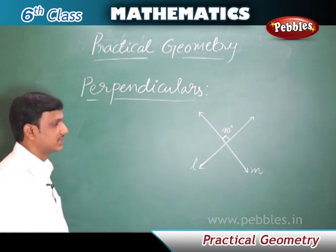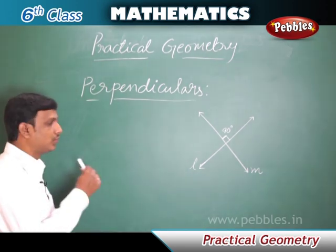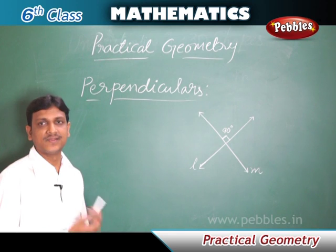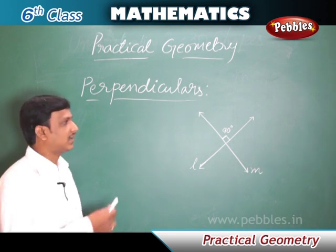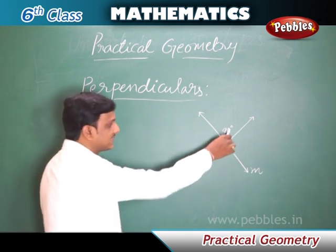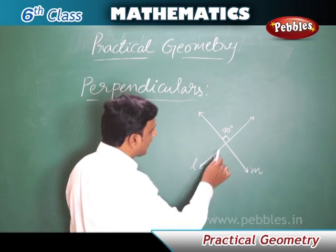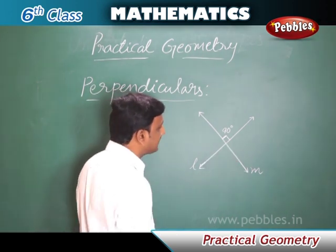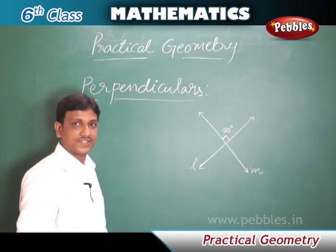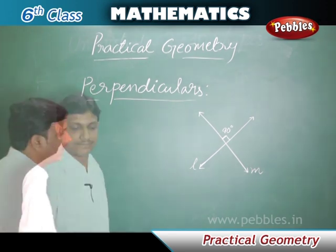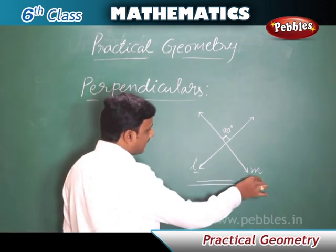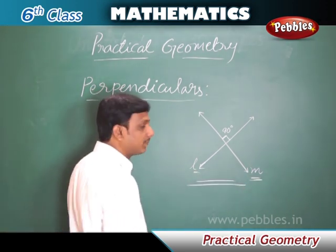Perpendicular lines. Two lines, rays, or segments are said to be perpendicular when they intersect each other at an angle of 90 degrees. In this figure, lines L and M are perpendicular to each other.